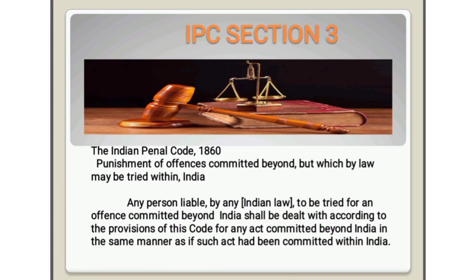Section 3 — Indian Penal Code 1860: Punishment of Offenses Committed Beyond India but Which May Be Tried Within India. Any person liable by any Indian law to be tried for an offense committed beyond India shall be dealt with according to the provisions of this code for any act committed beyond India, in the same manner as if such act had been committed within India.